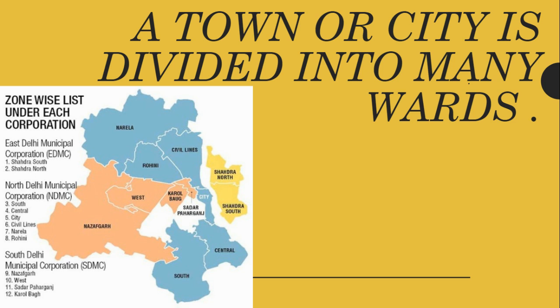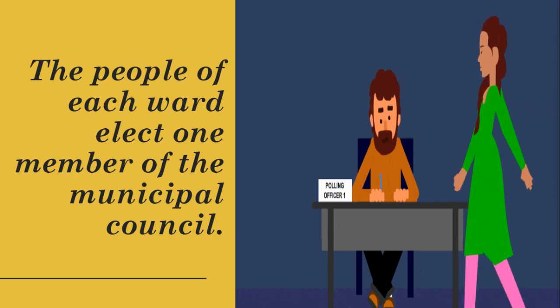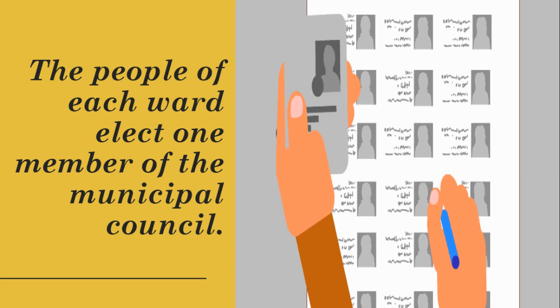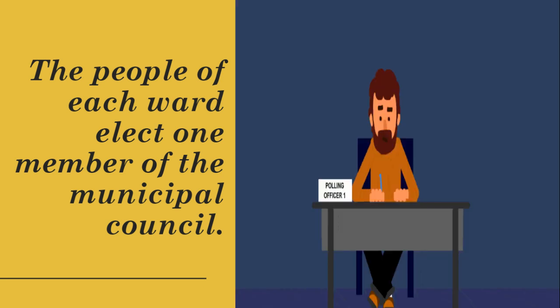A town is divided into many wards. As you can see in this map of Delhi, Delhi is divided into many wards. The people of each ward elect one member of the municipal council.